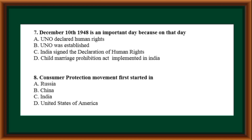December 10th, 1948 is an important day because on that day: the UN declared Human Rights, the UN was established, India signed the Declaration of Human Rights, or the Child Marriage Prohibition Act was implemented. Correct answer is option A — the UN declared Human Rights.